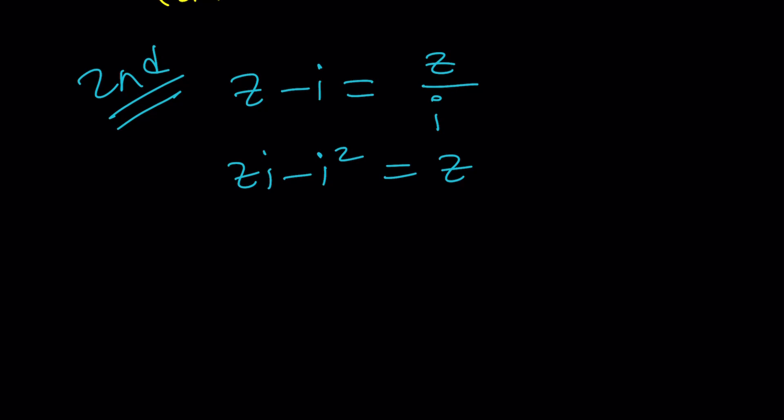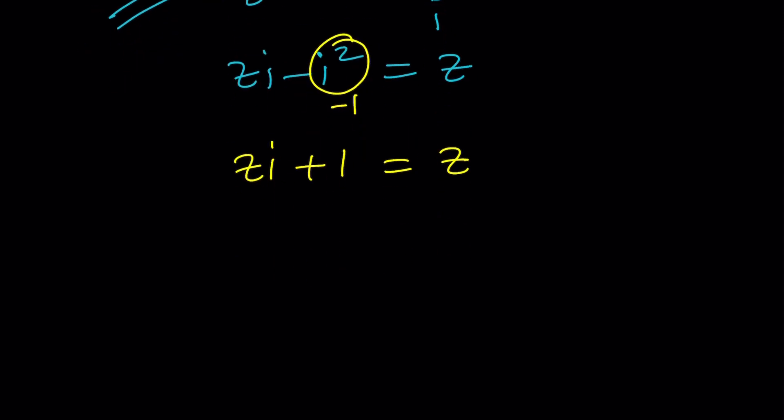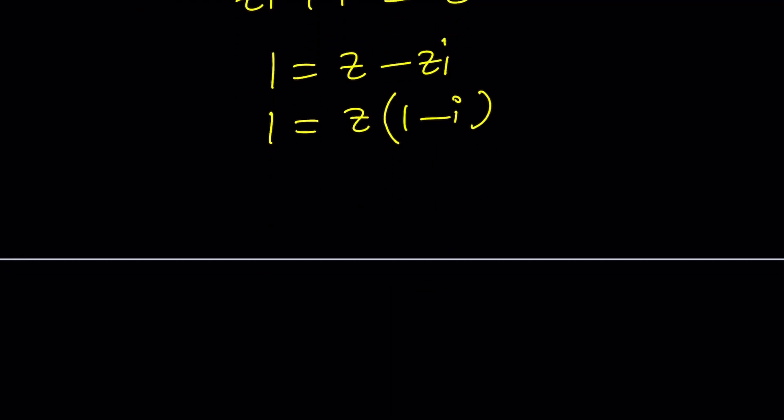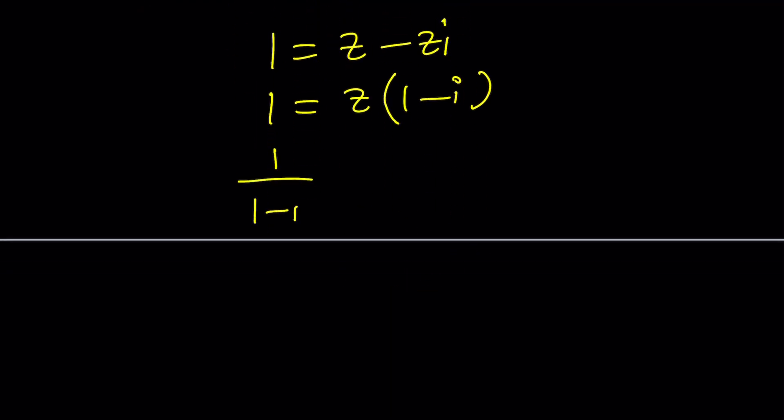I squared is negative 1. Remember, I squared is always negative 1, but negative I squared is positive 1. So this is ZI plus 1 equals Z. And then subtract ZI from both sides. 1 equals Z minus ZI. And then factor out the Z: 1 minus I. And then divide by 1 minus I.